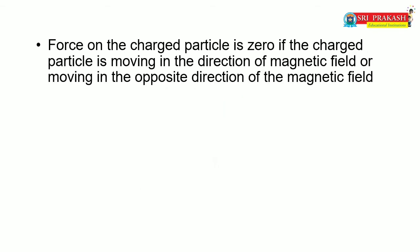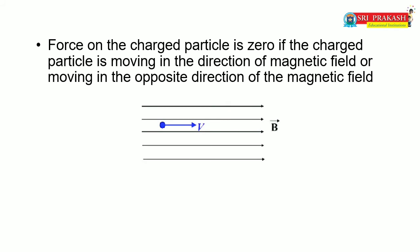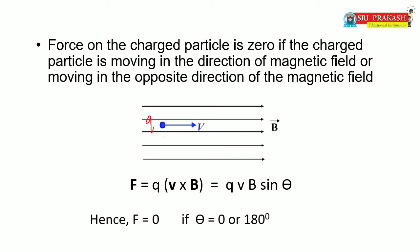The force on the charged particle is zero if it is moving in the direction of the magnetic field or in the opposite direction. If the charged particle Q moves parallel to the magnetic field, the net force is zero because according to F = QVB sinθ, when θ = 0°, sinθ = 0. Similarly, if moving in the opposite direction, θ = 180° and sin 180° = 0, so the force is zero in both cases.